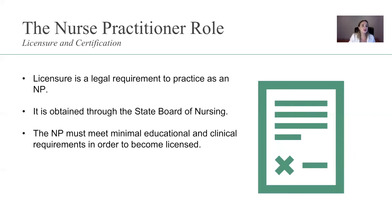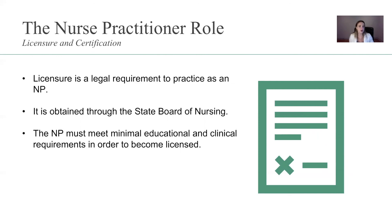Licensure and certification: licensure is a legal requirement to practice as an NP, obtained through the state board of nursing. The NP must meet minimum education and clinical requirements to become licensed. On matching questions in the ANCC, you know licensure is obtained through the state board of nursing, it is the legal authorization to work as an NP, and it requires meeting minimal educational requirements. This is common sense, guys — it's not that hard. I hope this is making you a little more excited.